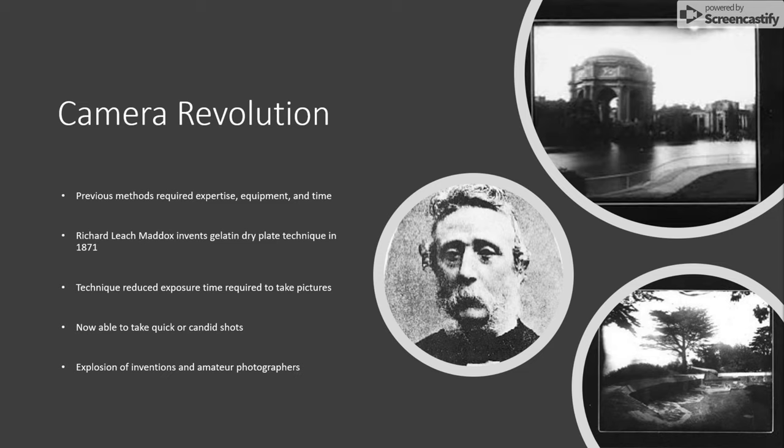Each successive technique after Daguerre developed used different combinations of unique camera designs or ingenious combinations of chemicals to produce images, and often both were required to progress the field. These methods were notoriously slow, however, and required extensive expertise and equipment to produce adequate photographs. It wasn't until the invention of gelatin dry plates in 1871, pioneered by Richard Leach Maddox, that photography entered the mainstream world. By using this revolutionary technique, photographers could reduce the required exposure time to take pictures.